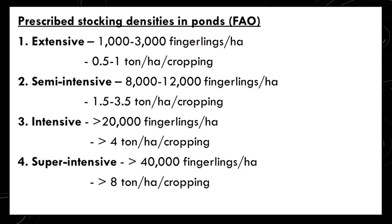According to the Food and Agriculture Organization or FAO, the prescribed stocking densities in ponds are: for extensive system, 1,000 to 3,000 fingerlings per hectare; for semi-intensive system, 8,000 to 12,000 fingerlings per hectare; for intensive system, more than 20,000 fingerlings per hectare; and for super-intensive, 40,000 fingerlings per hectare.